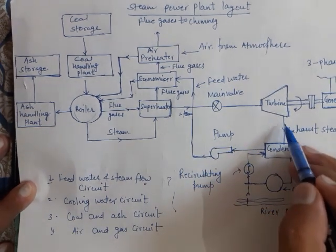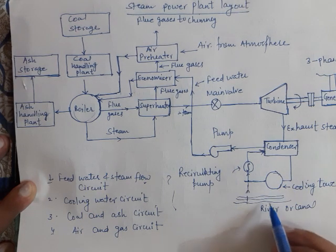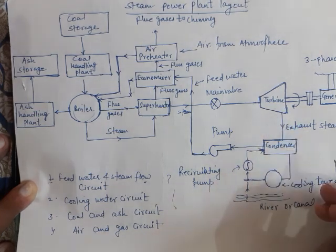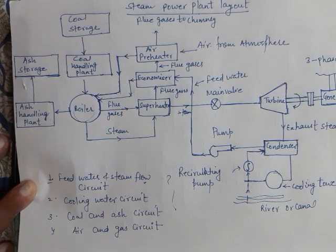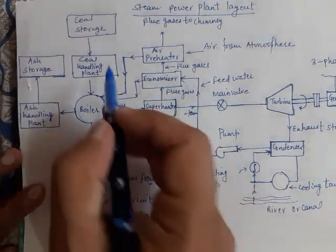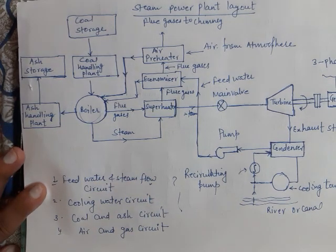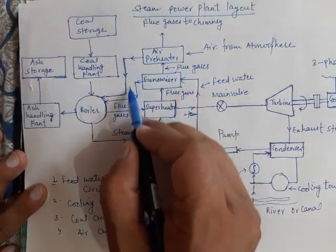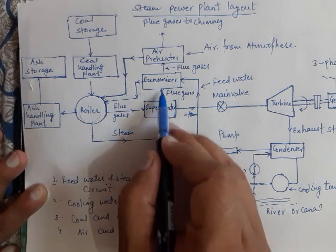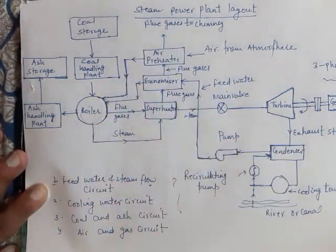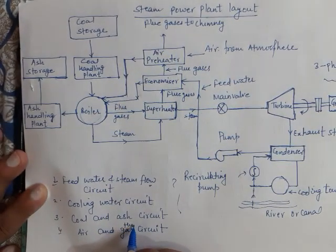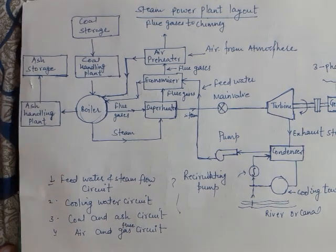The second is the cooling water circuit, where a cooling tower and cold river water are utilized to condense the steam coming out of the turbine. The third is the coal and ash circuit covering coal supply and ash removal. The fourth is the air and gas circuit, covering air from the air preheater and the flue gas path.